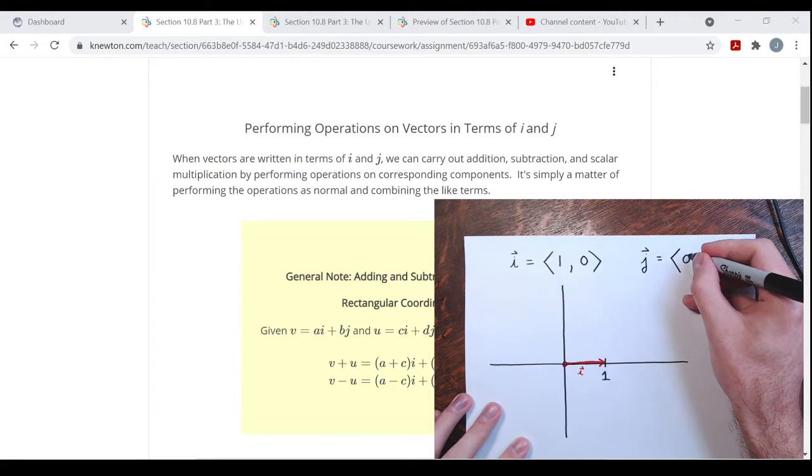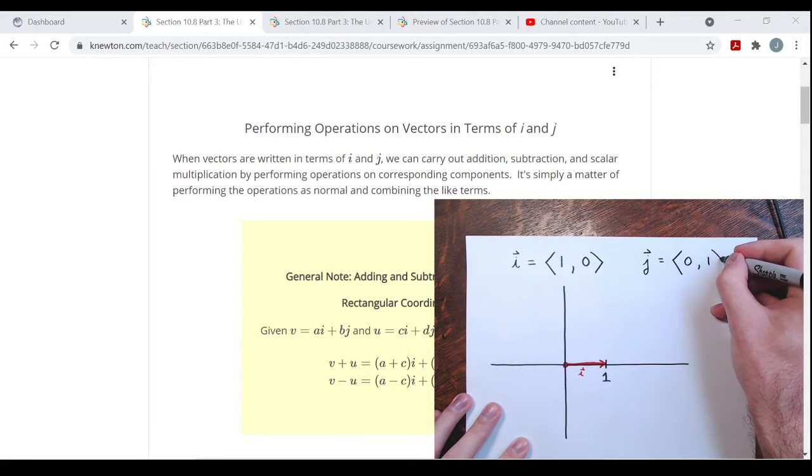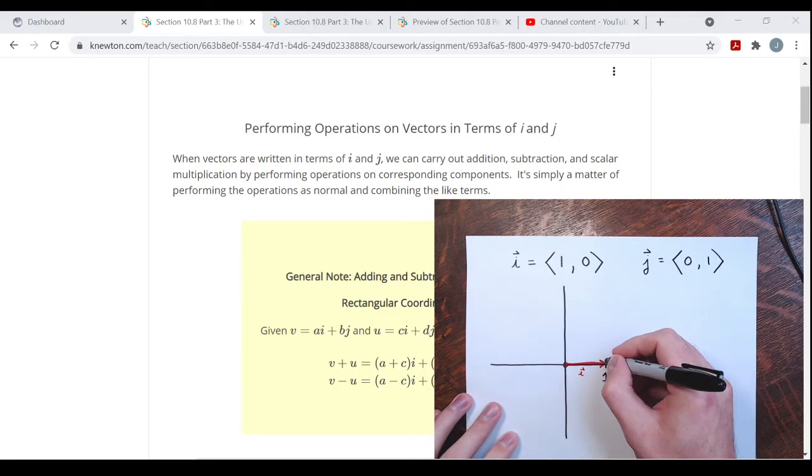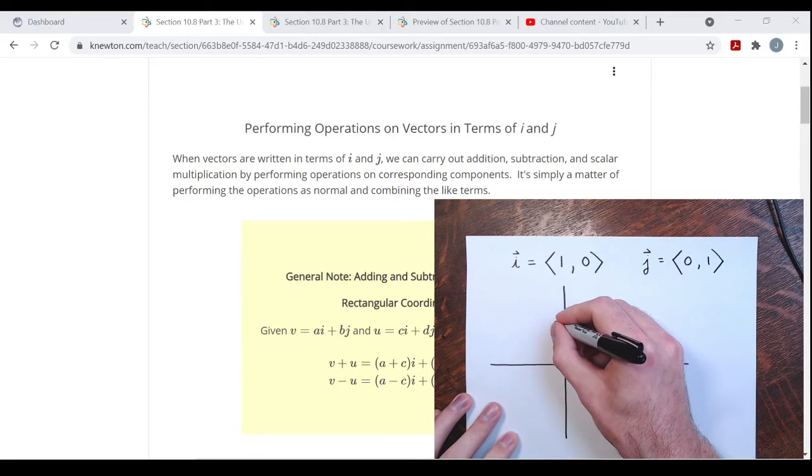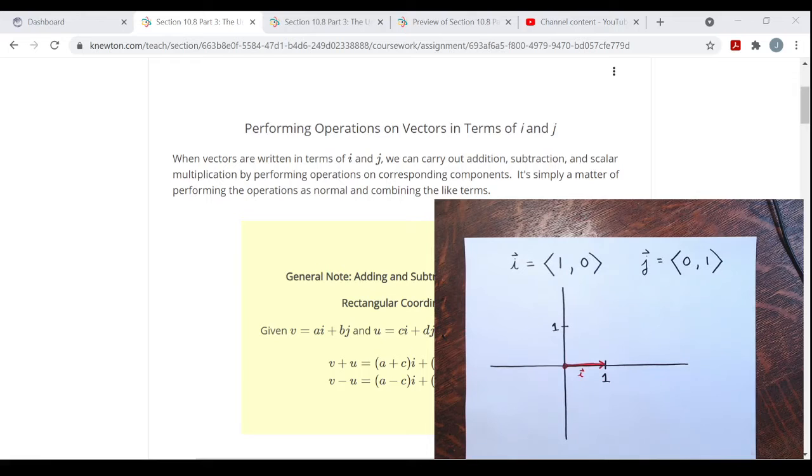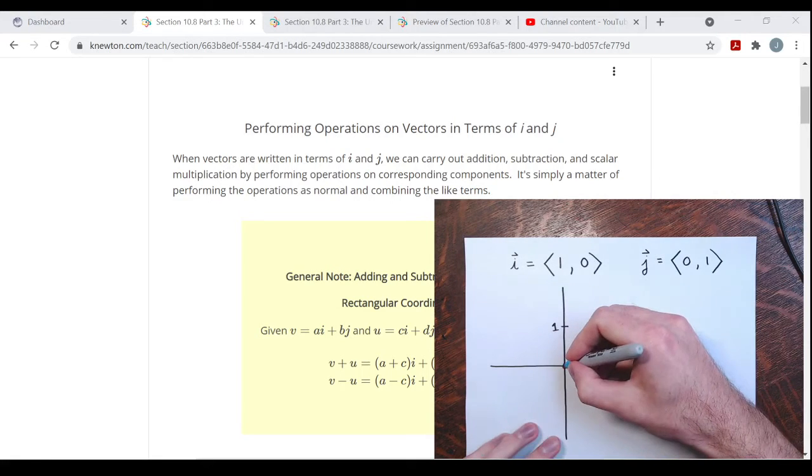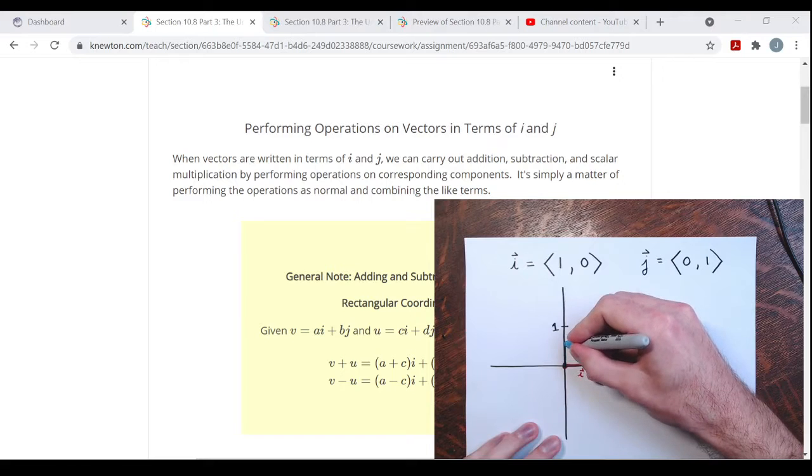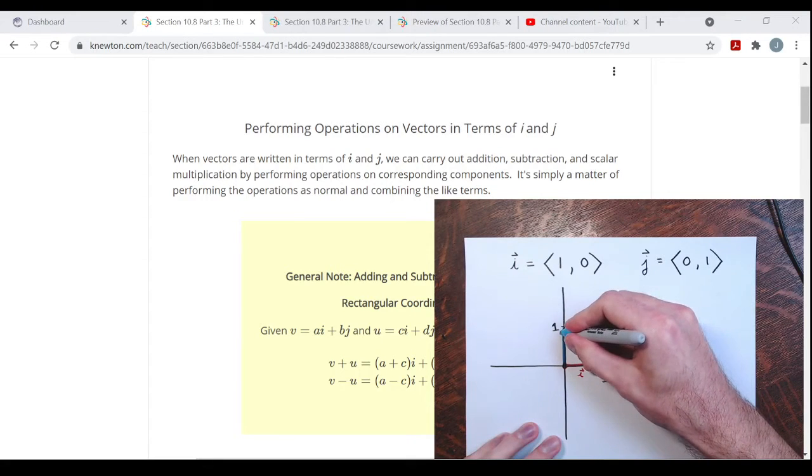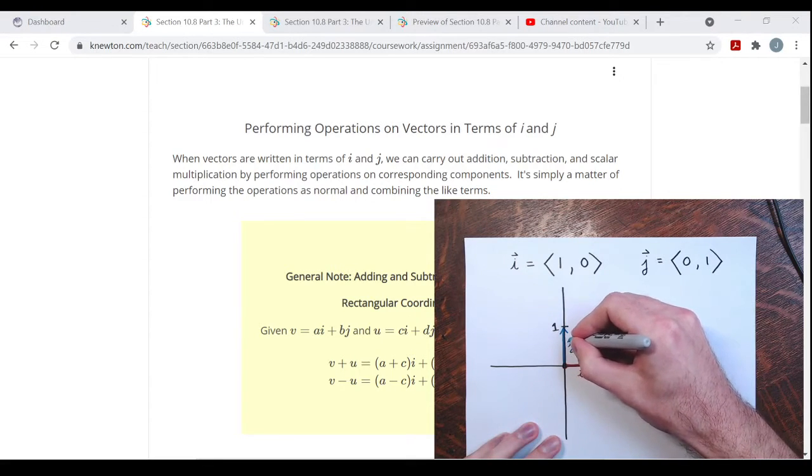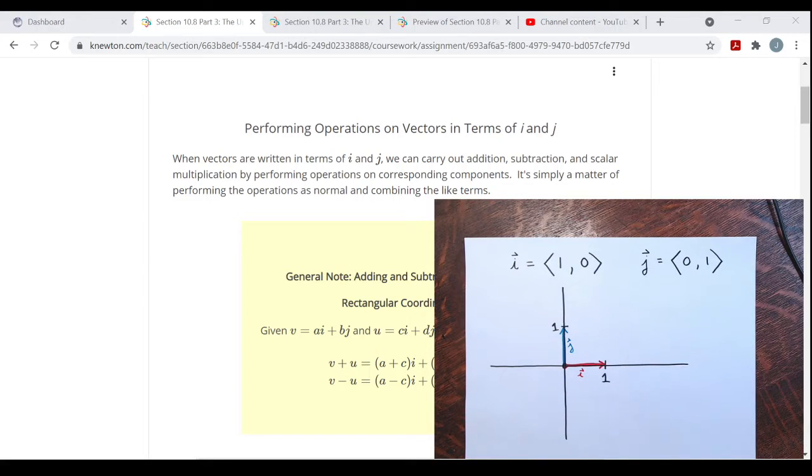On this picture, here's one on the vertical axis. The vector j is this vector starting from the origin, moving just one unit up. Here is vector j. Very simple, these vectors i and j. Every vector can be written in terms of using these i's and j's.